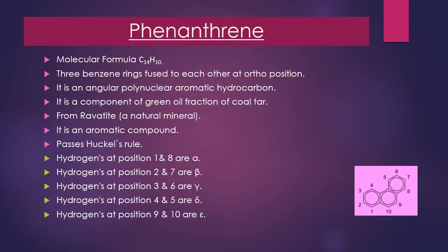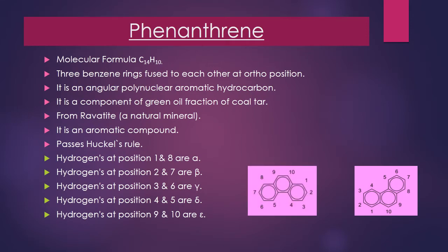Similar to anthracene, phenanthrene is a 14 pi electron delocalized system and is aromatic in nature because it is cyclic, conjugated, and planar. All the carbons are sp2 hybridized, and it passes Hückel's rule — that is, it has 4n+2 pi electrons in the system. It contains five different positions of hydrogens: alpha, beta, gamma, delta, and epsilon.